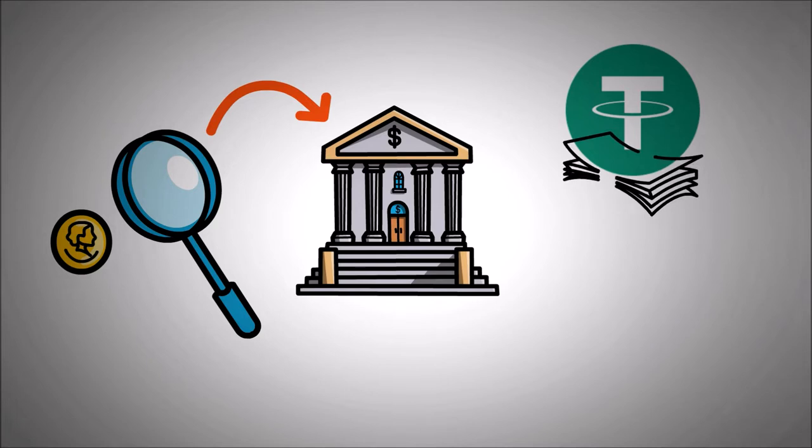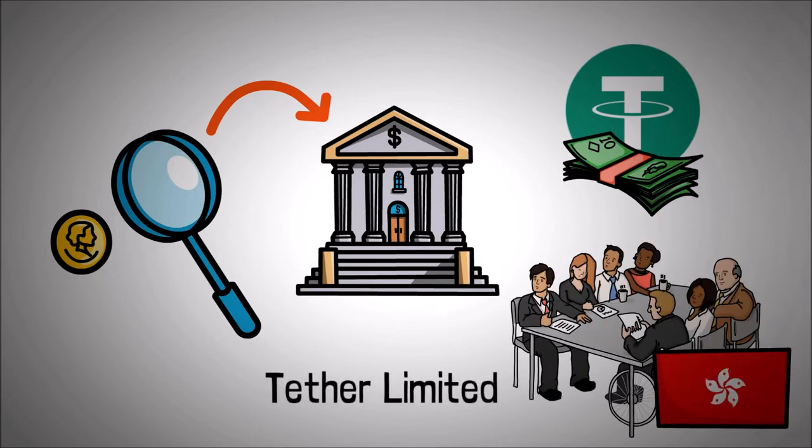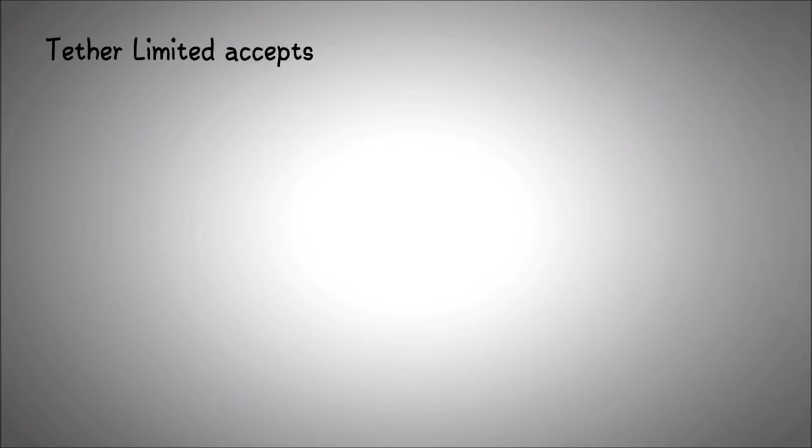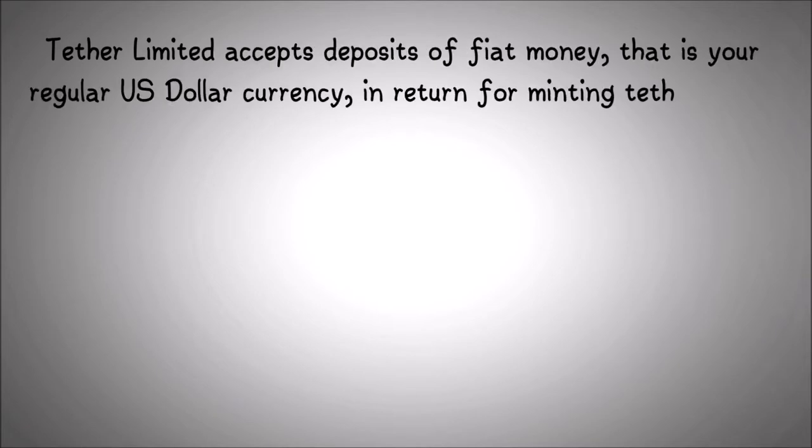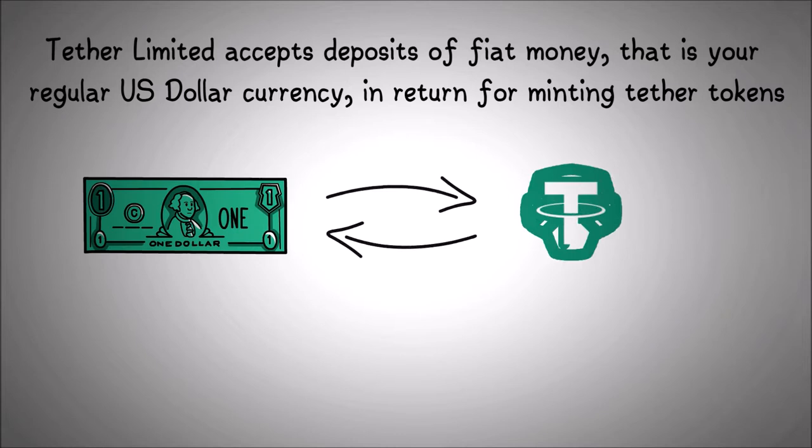USDT tokens are backed by US dollars and are issued by Tether Limited, a Hong Kong company. Tether Limited accepts deposits of fiat money, that is your regular US dollar currency, in return for minting Tether tokens. You can also withdraw your US dollar deposit by giving back USDT.